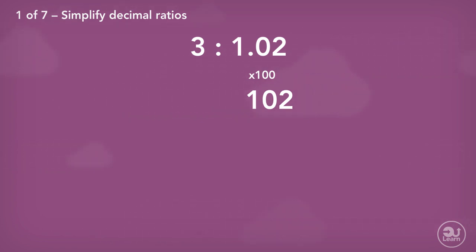Once again, if we multiply one value in the ratio by a number, we must do the same to the others within the ratio. 3 also gets multiplied by 100, which gives us 300. The new ratio is 300 to 102.